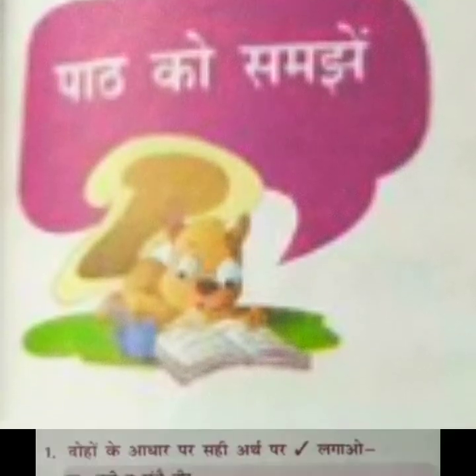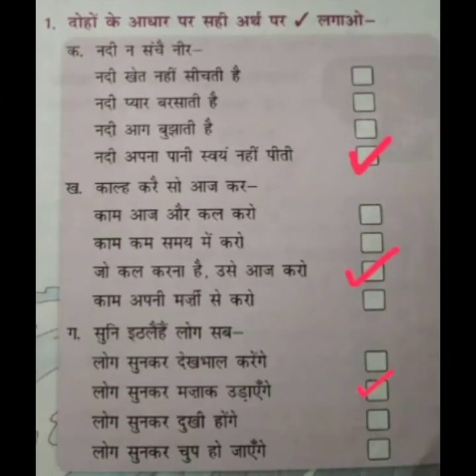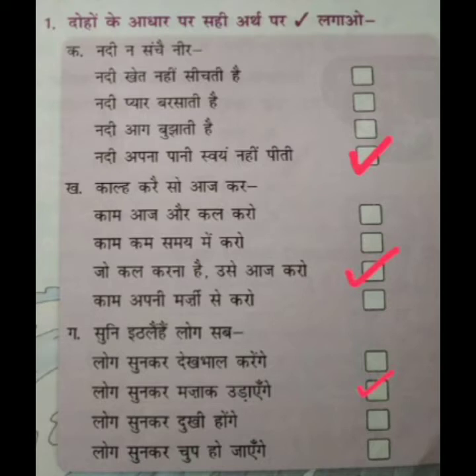Next is Paat ko samjhe. The first exercise is: Doho ke adhaar par sahih arth par tik lagao. The given line is Nadina Sanchei Neer — Nadi apna paani sanchit nahi karti, she does not collect it for herself. The correct option is: Nadi apna paani soyam nahi peeti. Put a tick here.